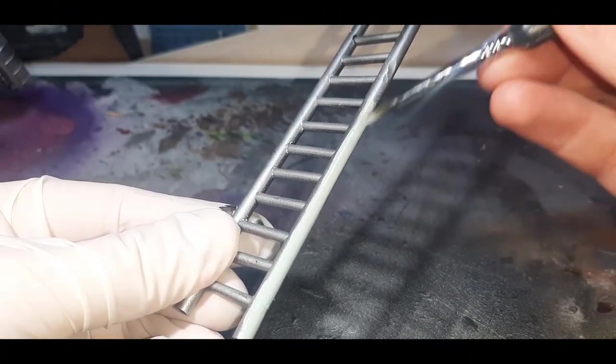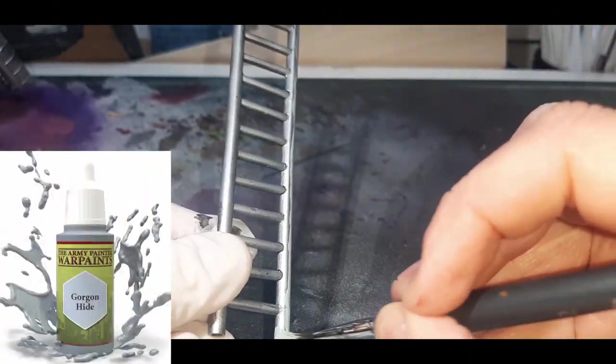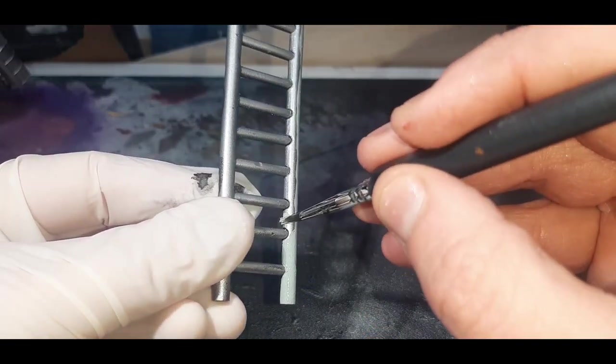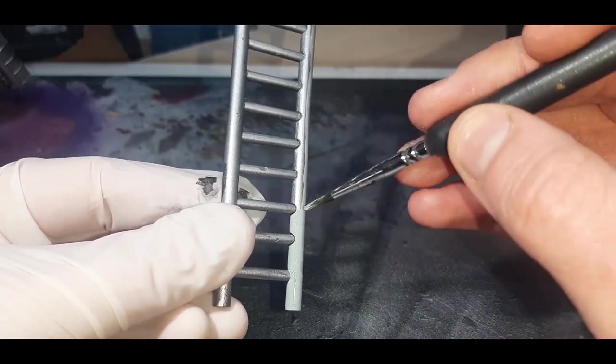This next ladder here is done with Gorgon Hide from the Army Painter, again with two coats. With this ladder I'm only painting the rails of the ladder, I'm avoiding the rungs and leaving them silver.